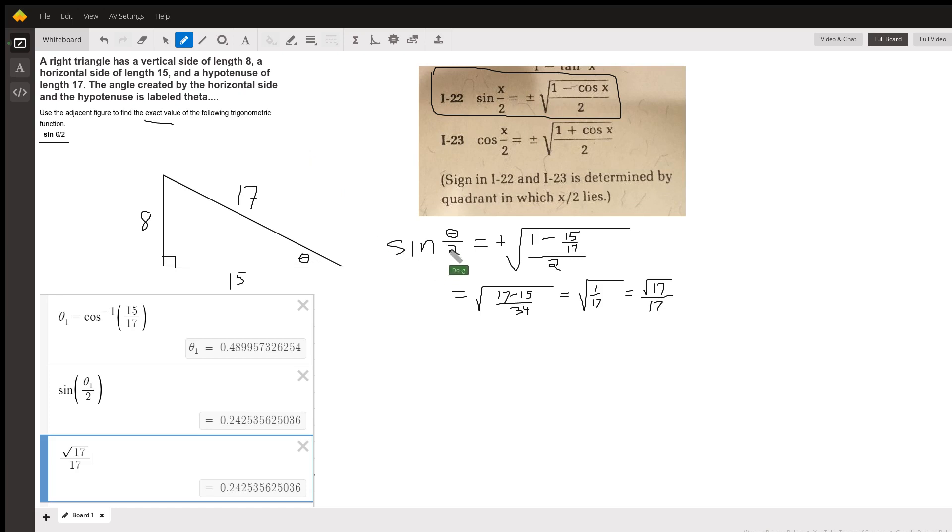So here's the sine of theta over 2 equals the positive square root of 1 minus the cosine of theta is adjacent over hypotenuse, 15/17 over 2. So essentially, I've just replaced this cosine of x with the 15/17 in the formula.